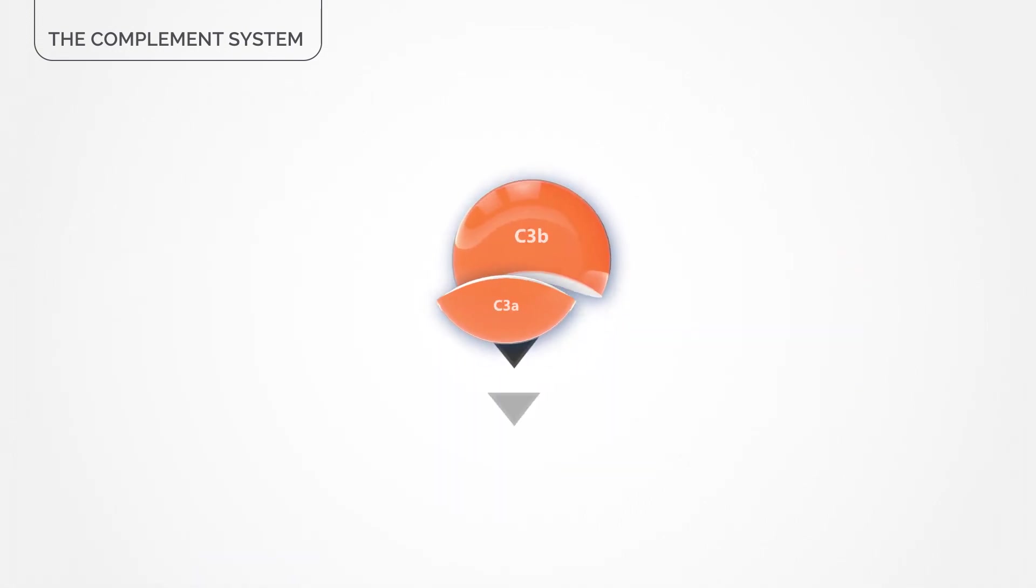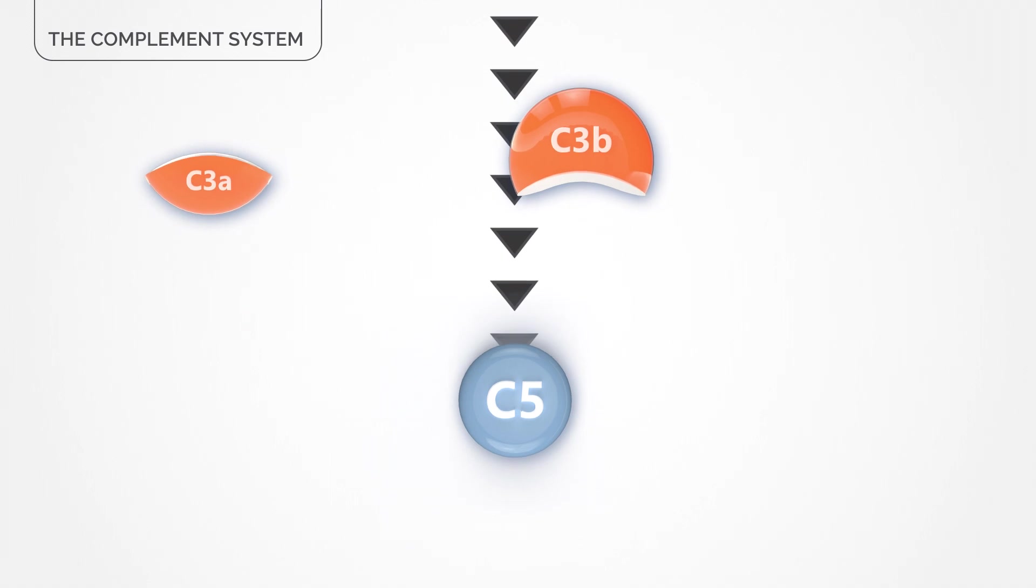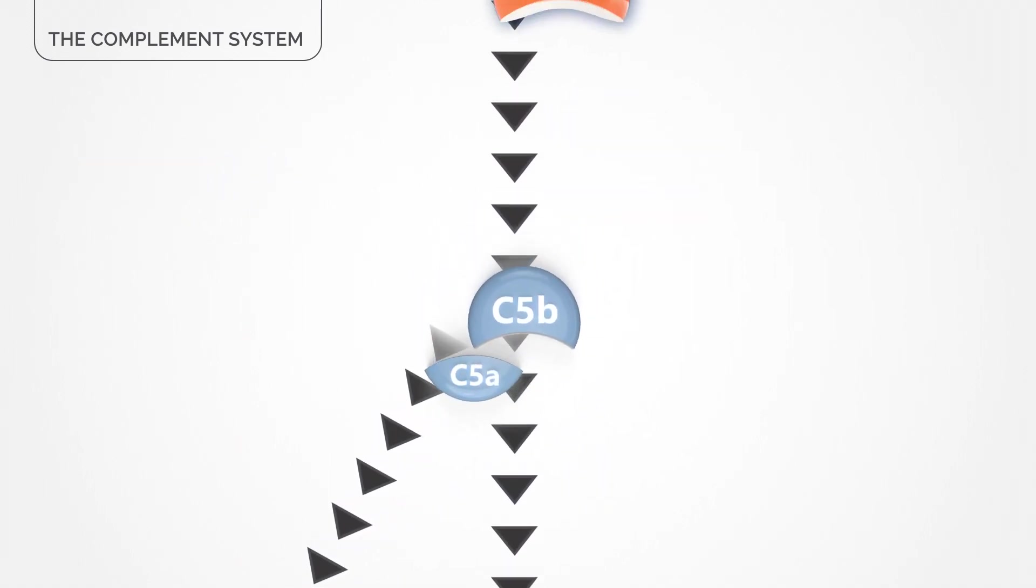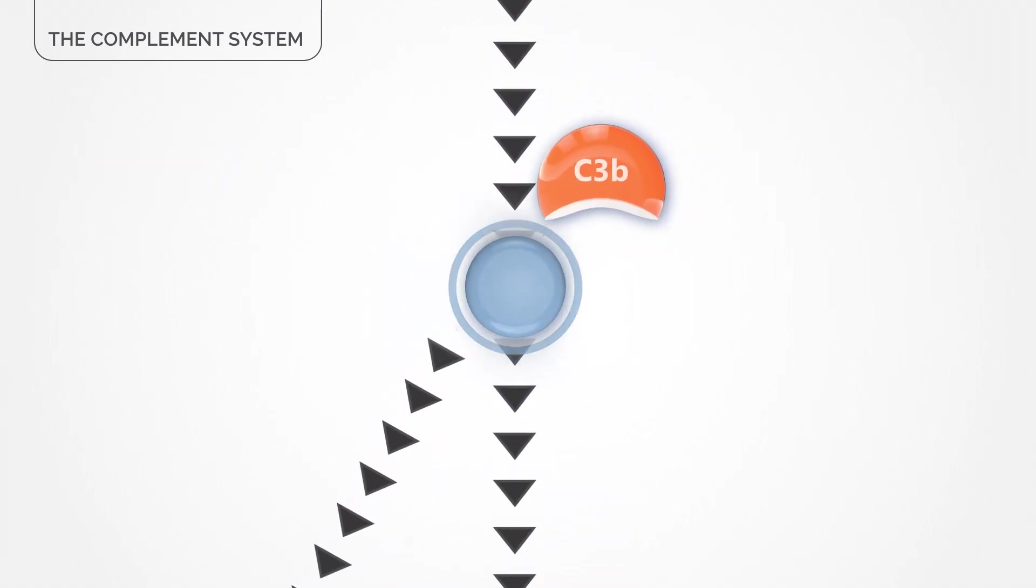The complement system consists of a cascade of proteins which activate each other by cleavage, the process of splitting each protein one by one.